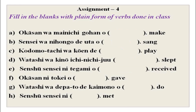Plain form of verbs - we will fill in the blanks with plain form. Okasan wa mainichi gohan wo tsukuru, tsukurimasu. Sensei wa nihongo de uta wo utatta, utaimashita. Kodomotachi wa kouen de asobu, asobimasu. Watashi wa kinou ichinichi juu neta, nemashita. Sensei ni tegami wo moratta, moraimashita. Okasan ni tokei wo ageta, agemashita.